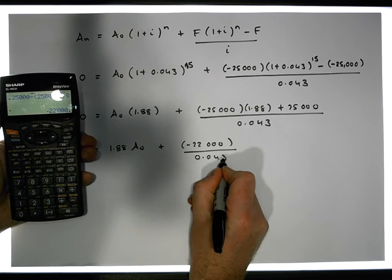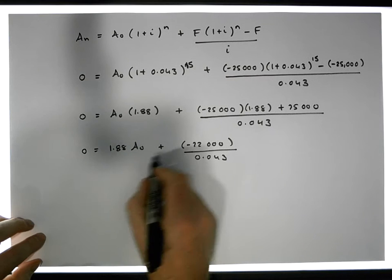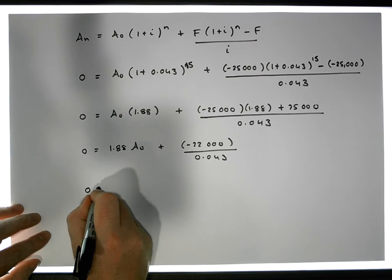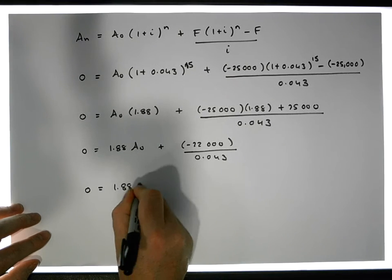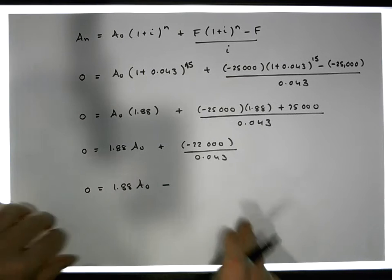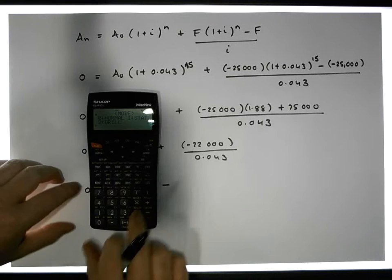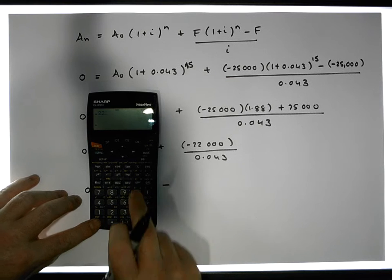Positive times a negative gives us a negative, so this is 0 is equal to 1.88 A0 minus, we do the division, so that's 22,000 euros divided by 0.043.